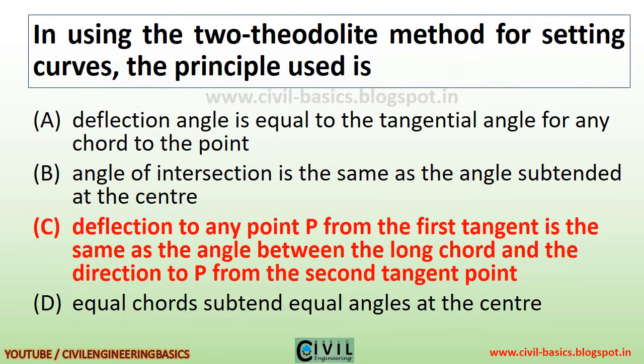In using the two theodolite method for setting curves, the principle used is: the deflection to any point P from the first tangent is the same as the angle between the long chord and the direction to P from the second tangent point.